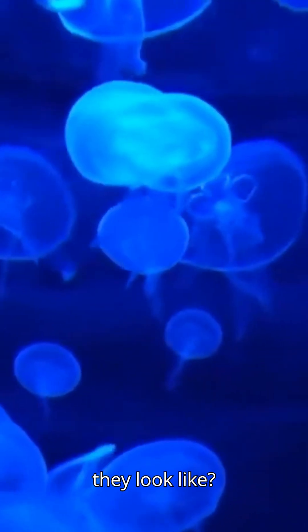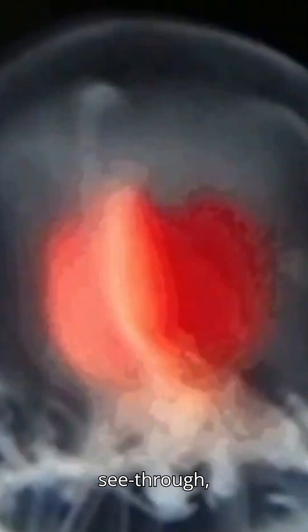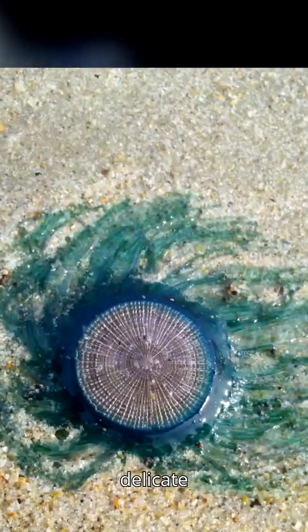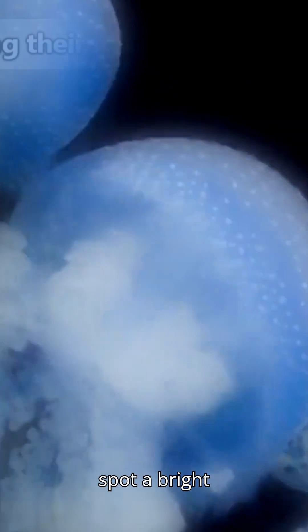So, what do they look like? They're tiny, only 3 to 4 millimeters across, about the size of a stud earring. Almost see-through, bell-shaped, with up to 90 delicate tentacles. Inside their transparent body, you can spot a bright red stomach.